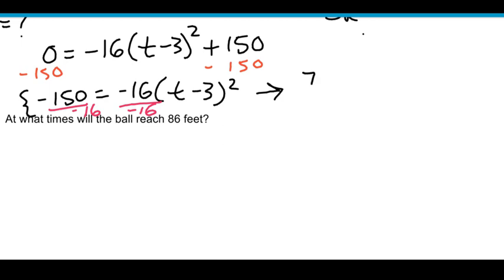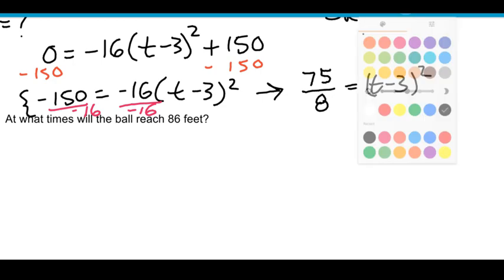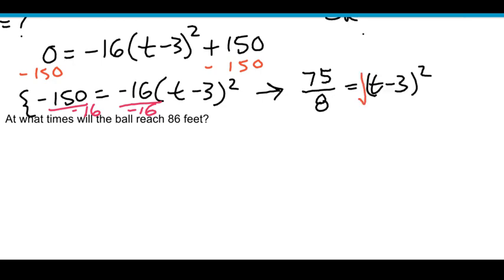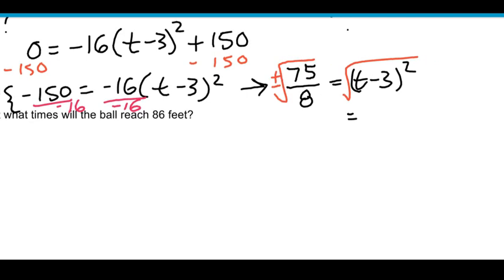And so let's see what we get. If we simplify that, on the left side we have two negatives right here being divided, so that turns positive. And if you just reduce 150 and 16, if you divide by 2, you're going to get 75 over 8. And that equals t minus 3 squared. And so using our square root property, we can take the square root of both sides. And then don't forget on the side with the number, put your plus and minus. So we just have t minus 3 now.